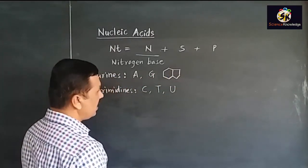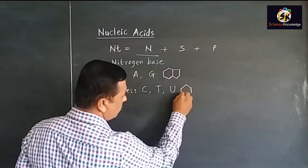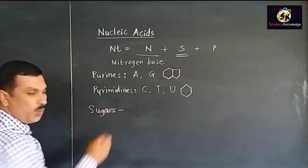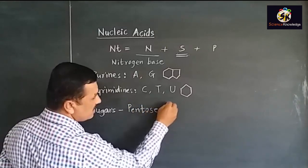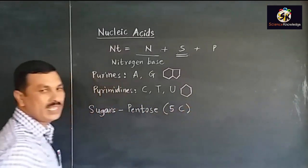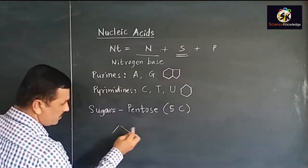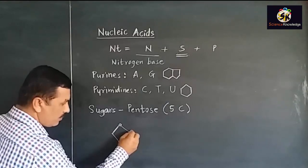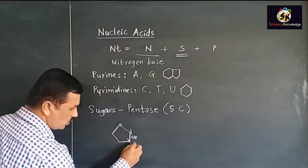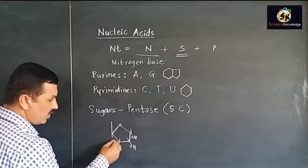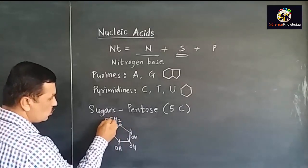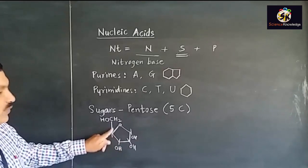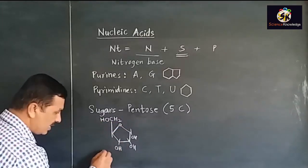There are two types of sugars, and both are pentose sugars, meaning they have five carbon molecules in their structure. The basic structure consists of a five-membered ring having four carbons and one oxygen. Carbon number one has OH, carbon number two has OH, carbon number three has OH, carbon number four has H, and the fifth one is CH2OH. This pentose sugar having five carbons is called ribose sugar.